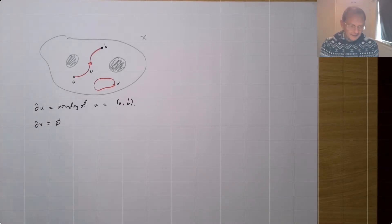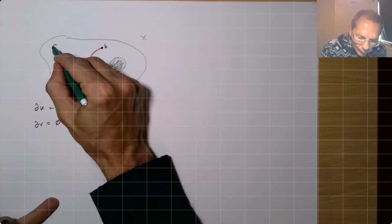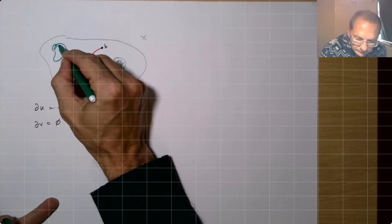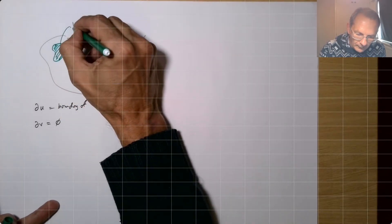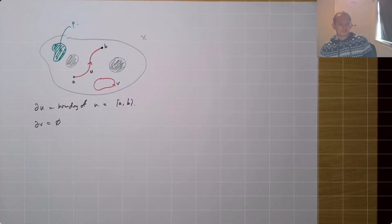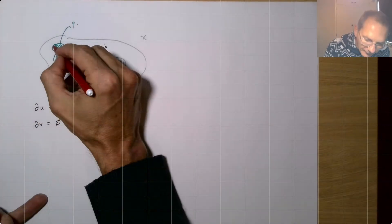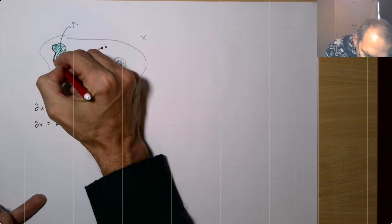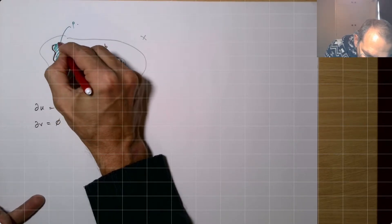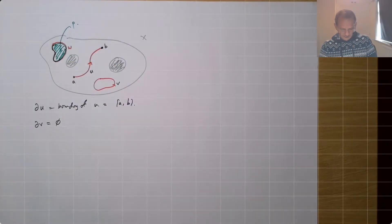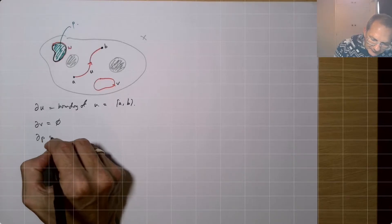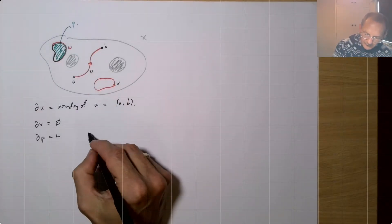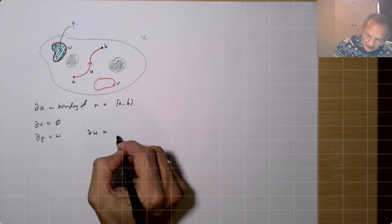So that's for kind of paths, but we can also think about doing this for a region. So let's call this region here P. So then what's the boundary of P? And the boundary of P is this path around the edge. Let's call this one W. And so we see that the boundary of P is W. And again, the W is a closed path, so the boundary of W is empty.